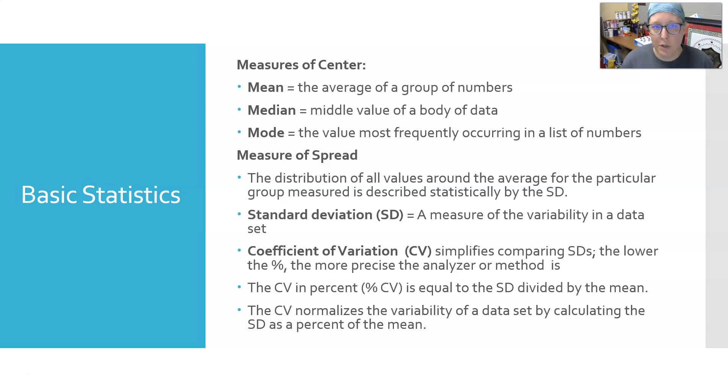First, the measures of center: the mean, median, and mode. The mean is the average of a group of numbers. The median is the middle value of a body of data. To get the median, you have to put the data in order from smallest to largest, and then it's the middle value.